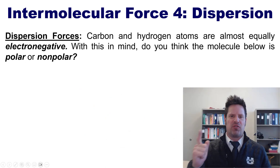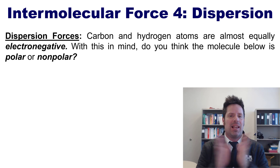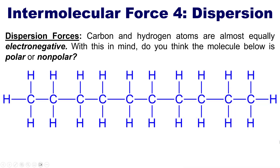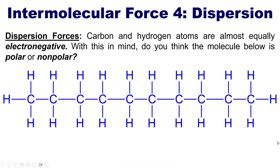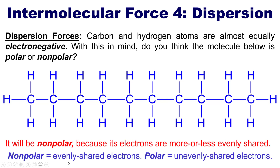That takes us to intermolecular force number four: dispersion forces. Carbon and hydrogen atoms are almost equally electronegative — not exactly the same, but really, really close. So a molecule made of all carbons and hydrogens will be nonpolar because its electrons are more or less shared evenly. Nonpolar means evenly shared electrons and polar means unevenly shared electrons. Thus, across such a molecule there's not a distinct strong partial plus or partial minus because carbons and hydrogens are close to equally electronegative.